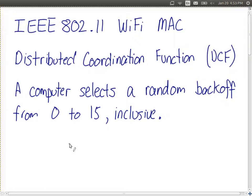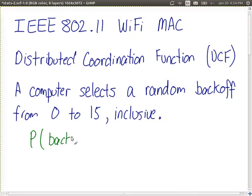So, in this case, what's the probability that a particular backoff value is chosen? The probability, for example, that the backoff chosen by a particular station, or computer, is, say, 3.